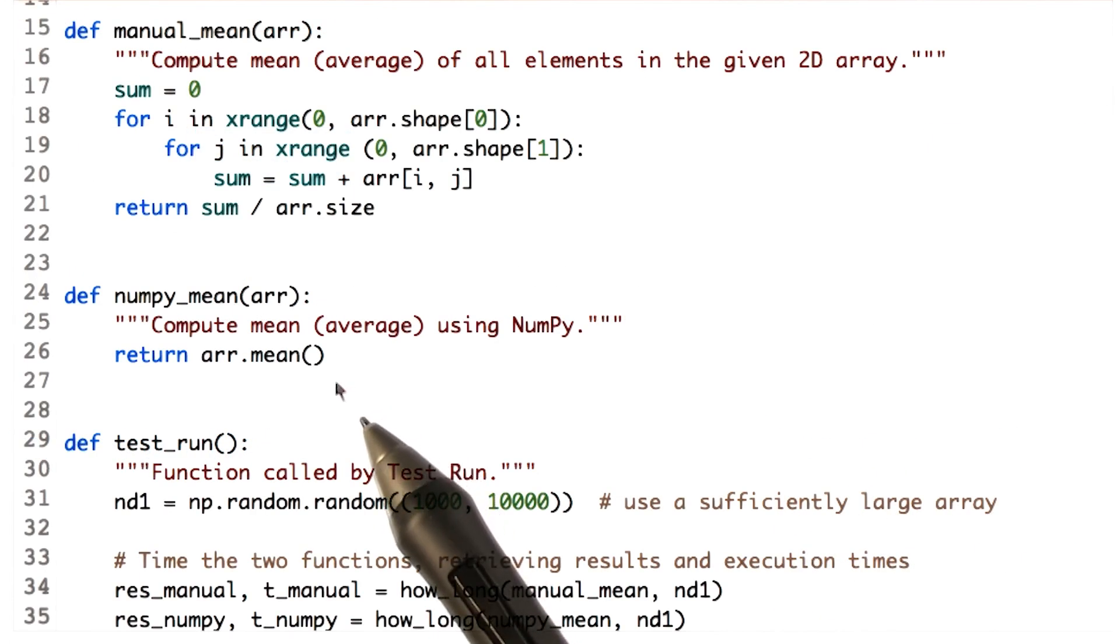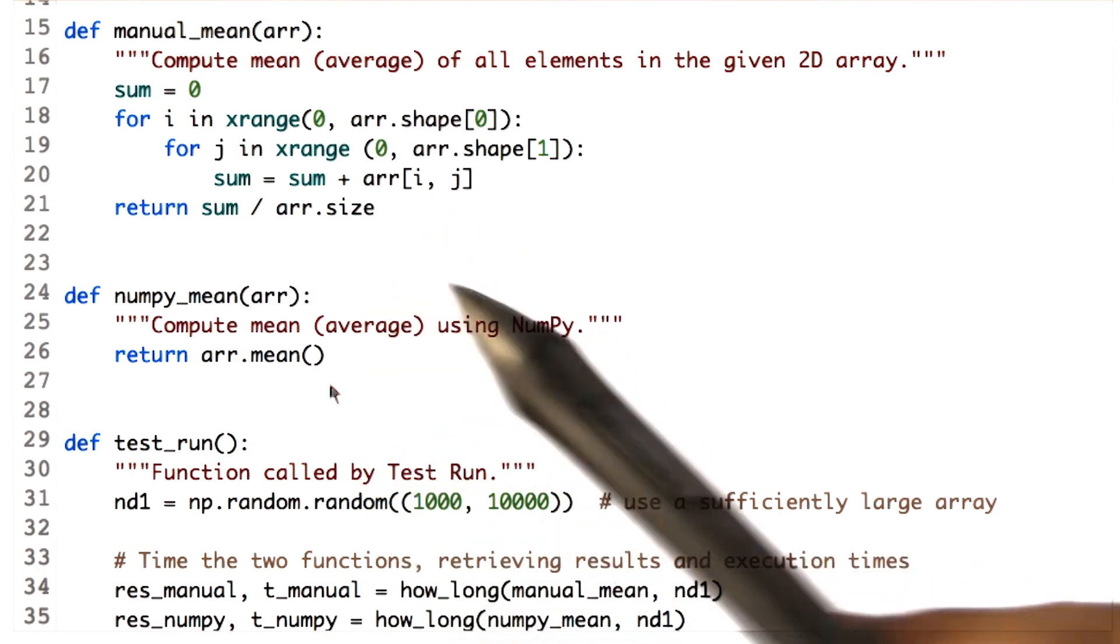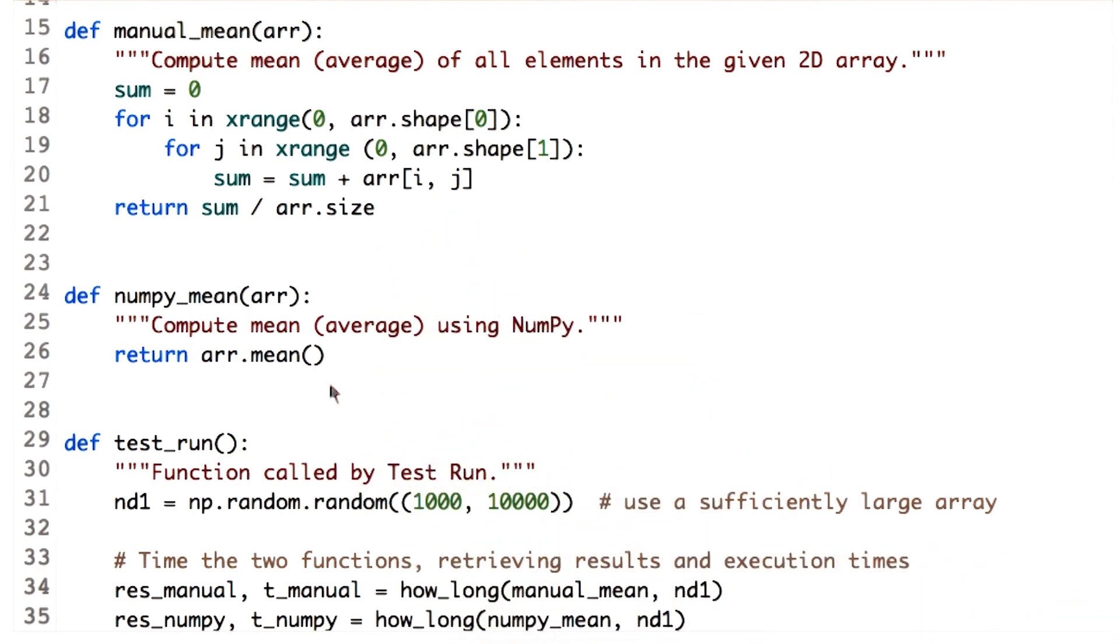Observe that NumPy not only makes the code much cleaner as compared to the manual method, but is about 290 times faster than the other method. Don't you think it's just awesome?